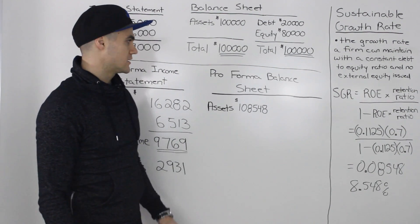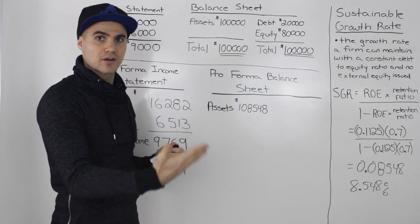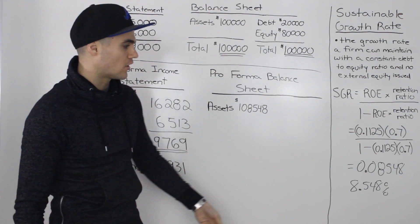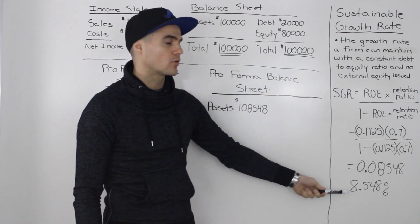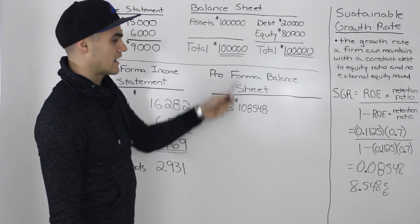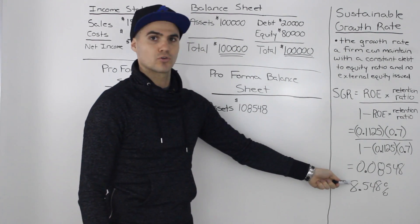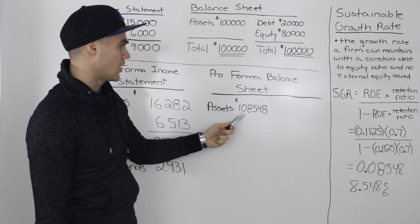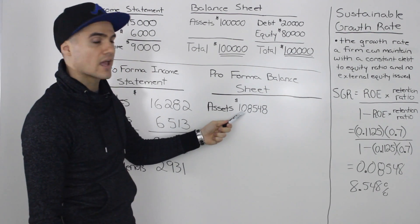Now let's make the pro forma balance sheet. We know that the assets vary with sales, so they're proportionate and also going to grow by the sustainable growth rate. Taking that previous asset figure of $100,000 and growing it at the sustainable growth rate, we would get a new asset figure of $108,548.